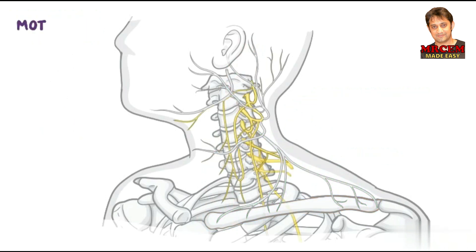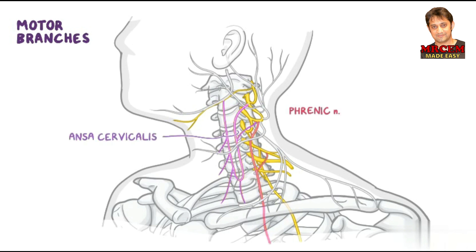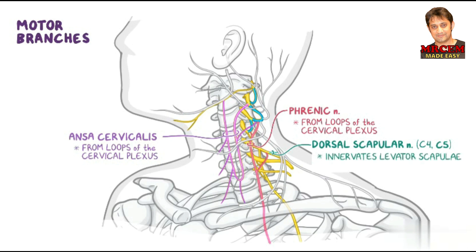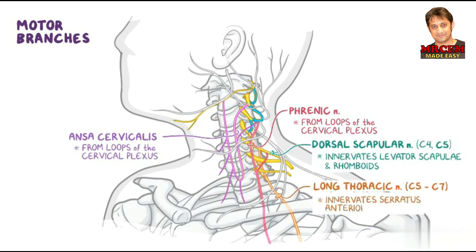The motor branches of the cervical plexus include the ansa cervicalis and the phrenic nerves, which arise from the loops of the cervical plexus, as well as branches that arise from the roots of the brachial plexus, such as the dorsal scapular nerve — mainly from C5 but sometimes also from C4 — which innervates the levator scapulae and rhomboid muscles, and the long thoracic nerve from C5 to C7, which innervates the serratus anterior muscle.